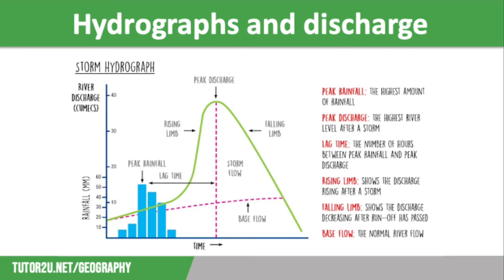Hydrographs can either be flashy response or slow flow hydrographs. Slow flow hydrographs have a steady rising limb with a similar gradient to the falling limb, low peak discharge, and a long lag time, meaning the flood risk is low. A flashy hydrograph shows a sudden onset flood event with a steep rising limb caused by high surface runoff, so water enters the river much more quickly with a short lag time, meaning the flood risk is high.